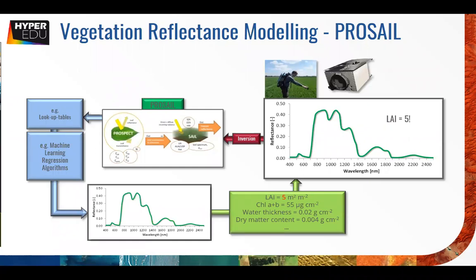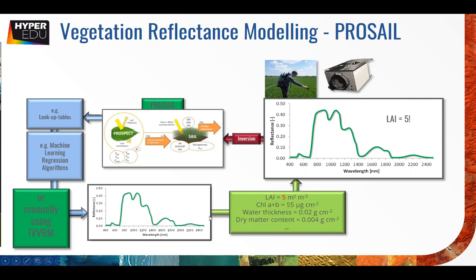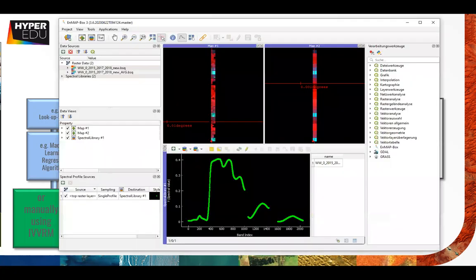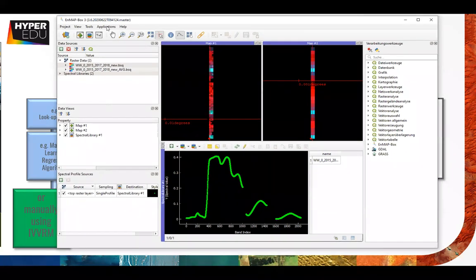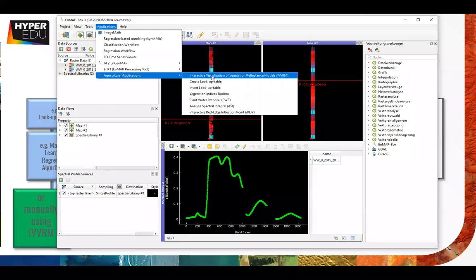Not only the LAI but also chlorophyll content, water content, and all the model parameters. We can also use our tool to retrieve that interactively by hand - so you will be the machine learning algorithm, more or less. That's what we're going to do first, so we go back to the MF box, go to Applications > Agricultural Application, and start the Interactive Visualization of Vegetation Reflectance - I'm going to call it IVVIM.